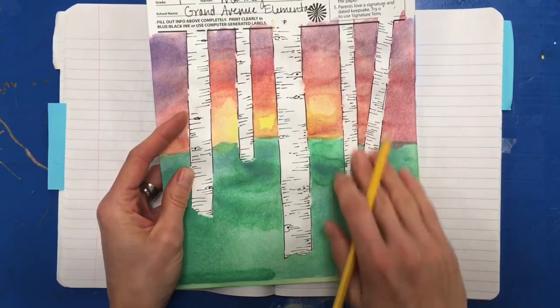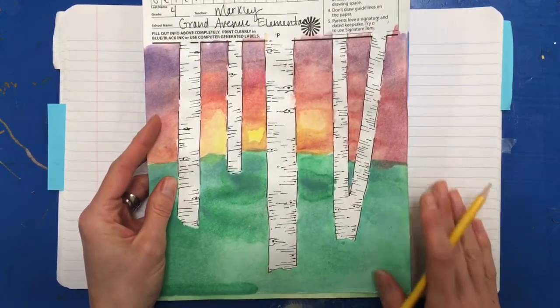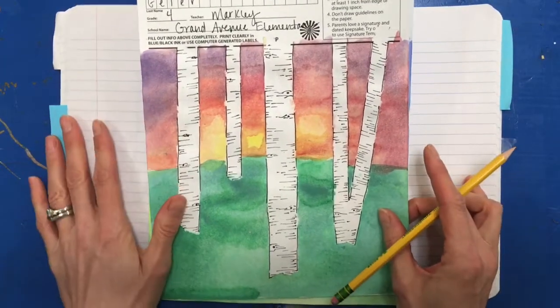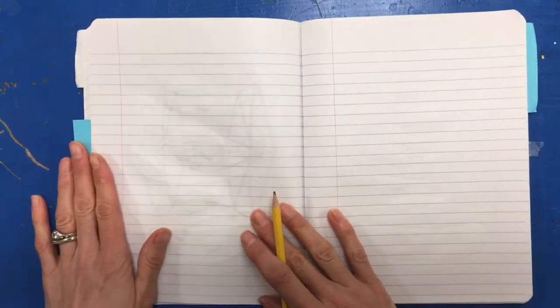...has four trees, one that splits into a Y, and then also more of a sunset background. So those are going to be some of your choices as you start to plan. So in your learning log or on a piece of paper we are going to plan out our painting.